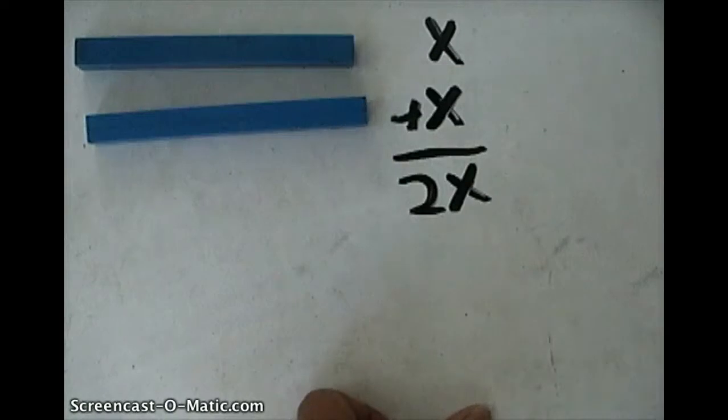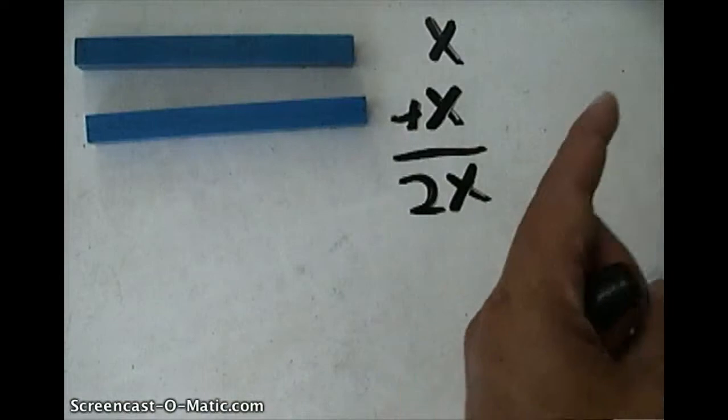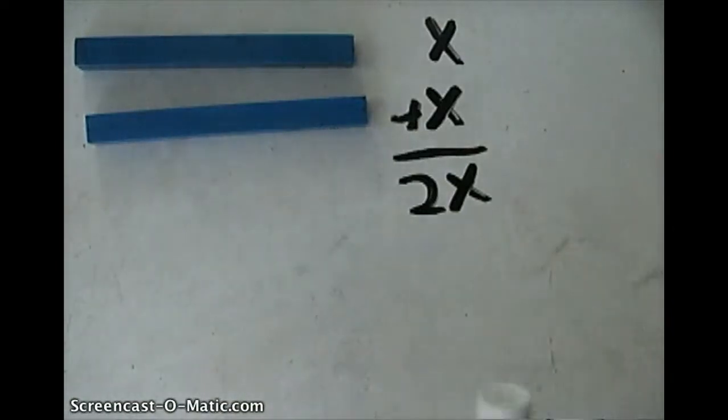Numbers tell you how many. Places tell you what kind, right? This time, this tells me two of the X kind. Two of the X kind. Anything hard about that?